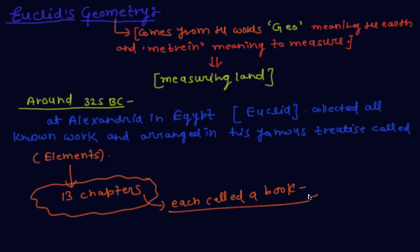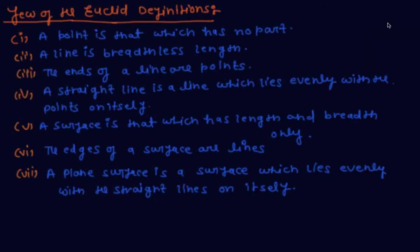Euclid listed a total of 23 definitions in Book One of the Elements. Now continuing to the second page — in Book One, a few of Euclid's definitions are as follows.